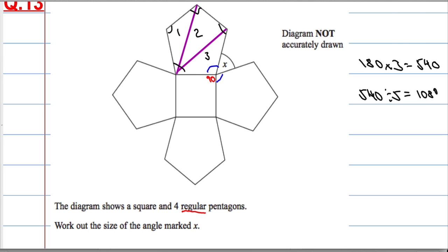So this blue angle here is 108 degrees, as are all the other angles. So that's 108 degrees, that will be 108 and that will be 108 because they're all pentagons, five-sided shapes.